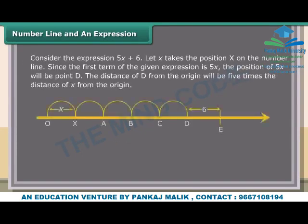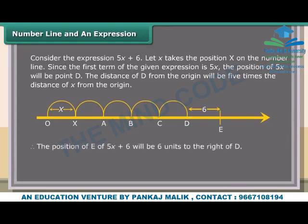Consider the expression 5x + 6. Let x take its position on the number line. Since the first term is 5x, the position of 5x will be point D, whose distance from the origin is 5 times the distance of x from the origin. Therefore, the position of point E for 5x + 6 will be 6 units to the right of D.